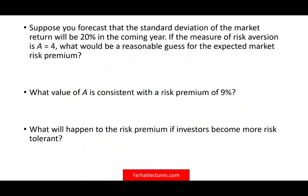Let's look at another example. Suppose you forecast that the standard deviation for the market is 20%. If the measure of risk aversion equals 4, what would be the reasonable expected market risk premium? Here we are given A equal to 4 and the standard deviation of 0.2, and we are asked to compute the expected risk premium.